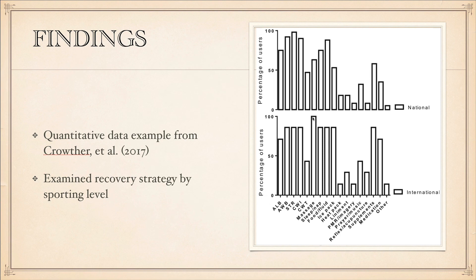For instance, 100% of international athletes utilized massage as a recovery technique, versus approximately 70% of national athletes. So we see some differences. This allows us to look at what types of recovery techniques are used most frequently, which ones least frequently, and whether there are differences in frequency of use between these groups. This is a clear example of quantitative data from this study.